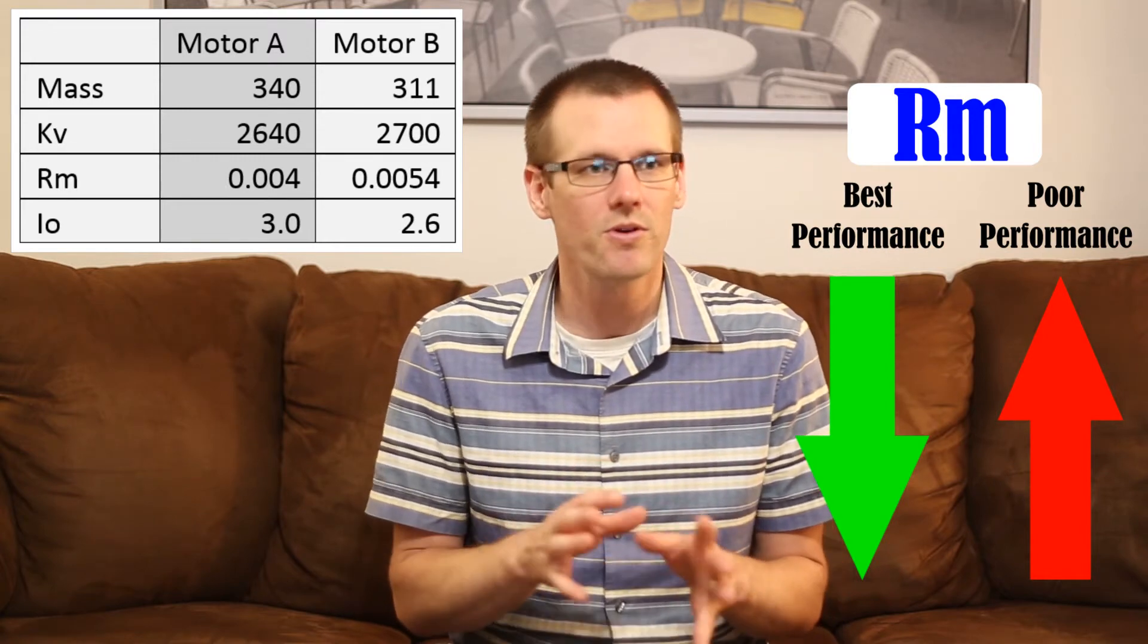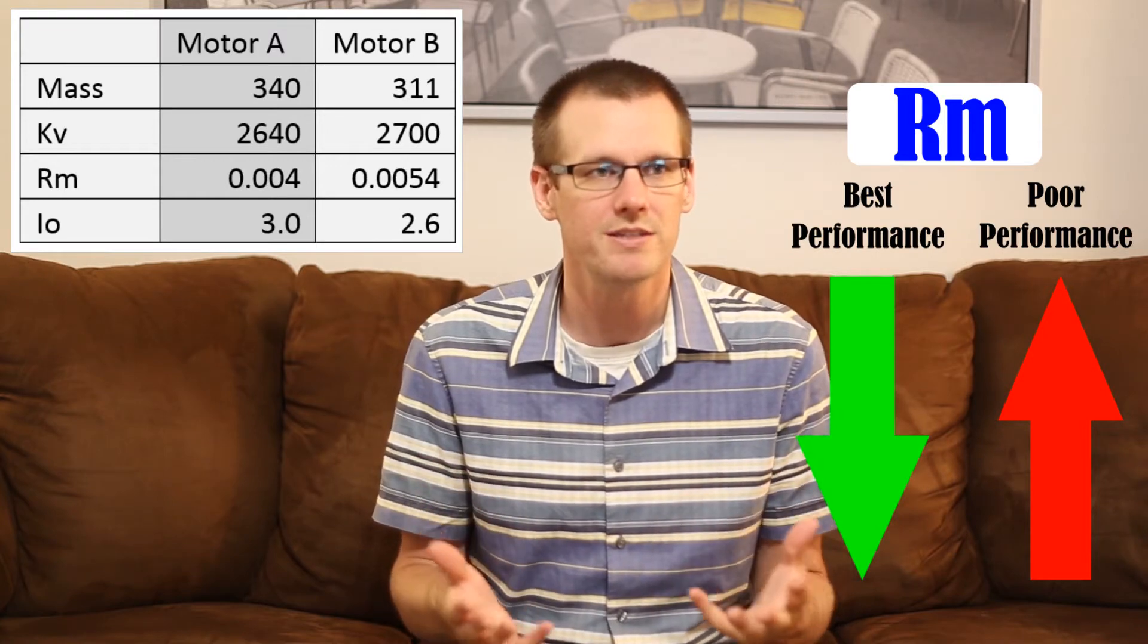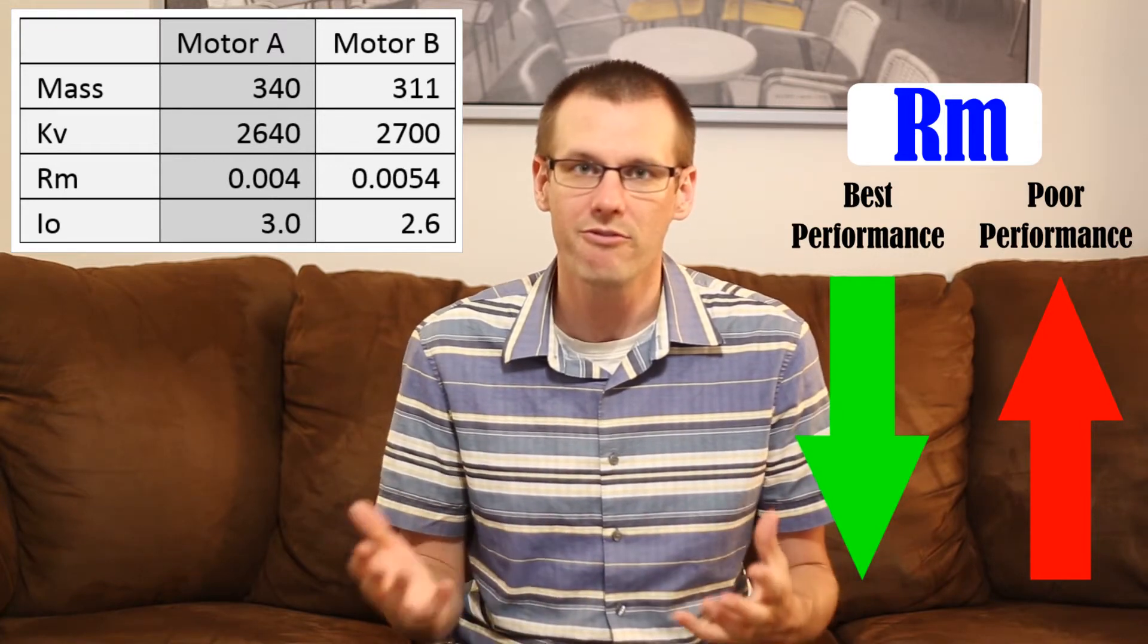So when we look at motor A sitting at 0.004 ohms and motor B sitting at 0.0054 ohms, we know that motor A is going to be able to output a specific amount of power at a reduced amount of waste heat because of that internal resistance.